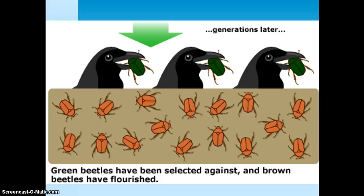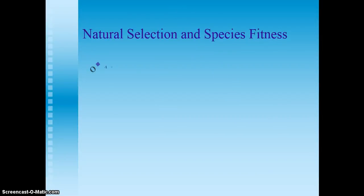And lo and behold, after multiple generations, the green beetles have all been selected against — they were eaten by the birds — and the brown beetles have flourished because they survived and were able to reproduce offspring.